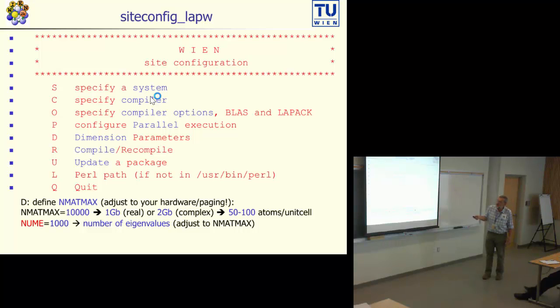In terms of dimensions, there is a parameter NMATMAX which should be adjusted to your specific hardware. Suppose you set NMATMAX to 10,000, this gives you the maximum matrix size allowed for calculations. Wien2K will reduce automatically the matrix size to this limit. So don't expect when you run with NMATMAX 10,000 and you create a huge supercell of 100 atoms with RKmax equals 10, that you really get this RKmax. Wien2K will automatically reduce the RKmax until the matrix is smaller than this NMATMAX.